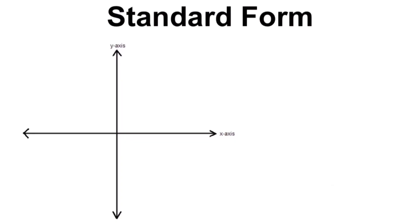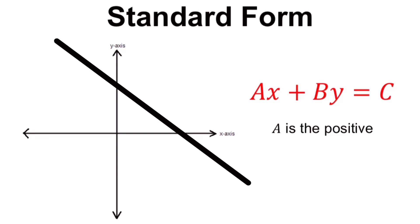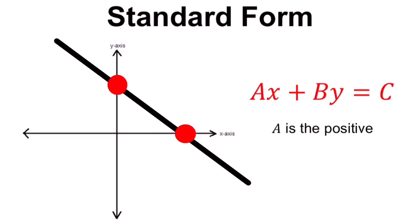Standard form has the formula ax plus by equals c, where a should always be positive. This standard form is generally used to determine the x and y intercepts of a line — it tells us where the line touches the y-axis and x-axis. We also use this standard form in solving systems of equations.